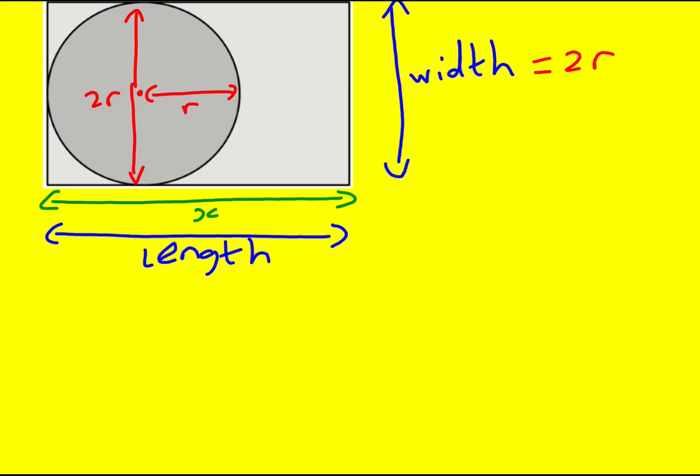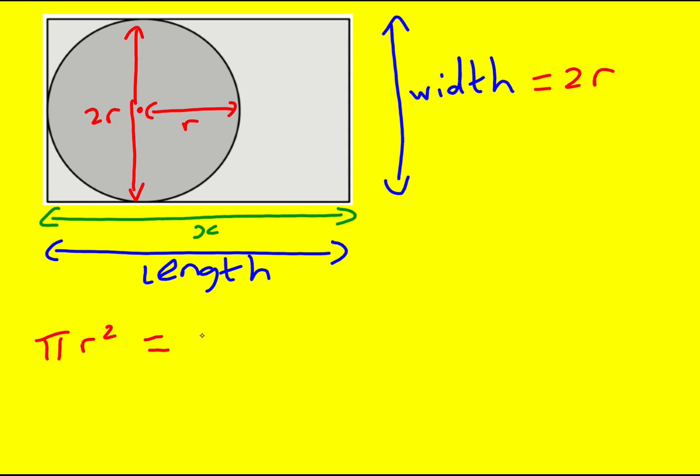So we've got the area of the circle, which is going to be πr², and that is going to equal the area of the rectangle, which is going to be x times 2r, or 2xr,